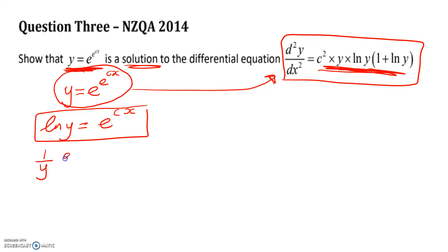Sorry about the background noise, but it is Thursday night. Right, so 1 over y, dy by dx, on that side. And on this side, the first derivative is c e to the power of cx. So we can rewrite that as dy by dx is equal to cy times e to the cx.